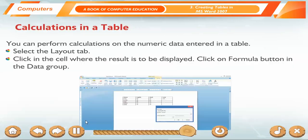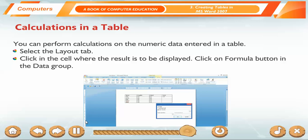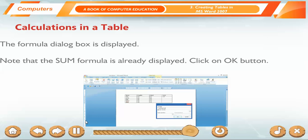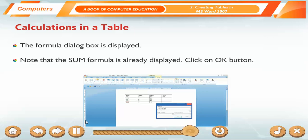Calculations in a table. You can perform calculations on the numeric data entered in a table. Select the Layout tab. Click in the cell where the result is to be displayed. Click on Formula button in the data group. The Formula Dialog box is displayed. Note that the sum formula is already displayed. Click on OK button.